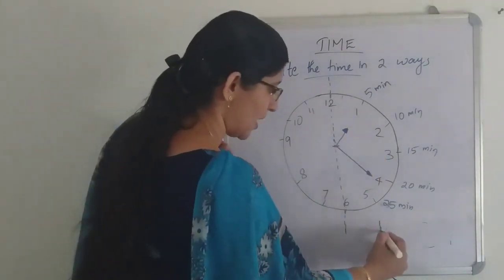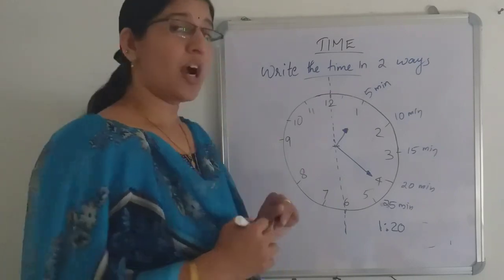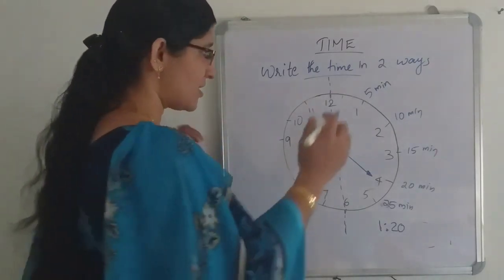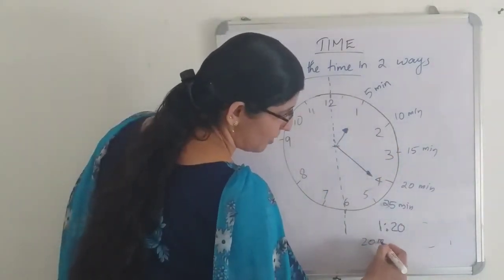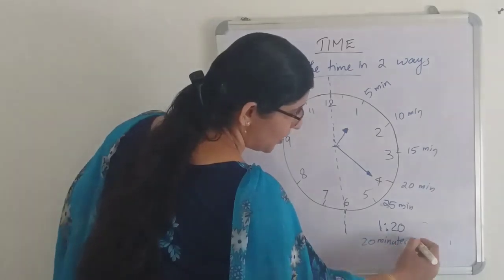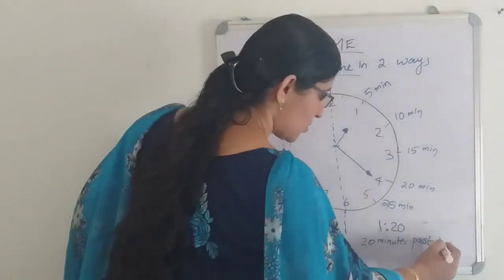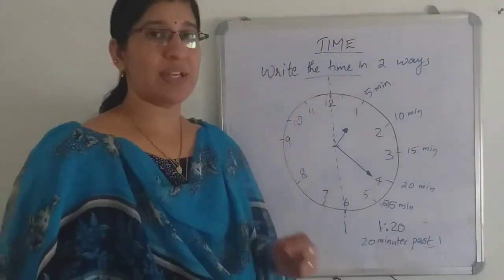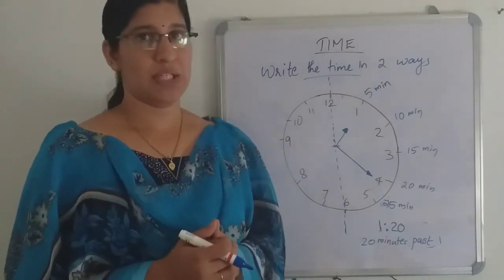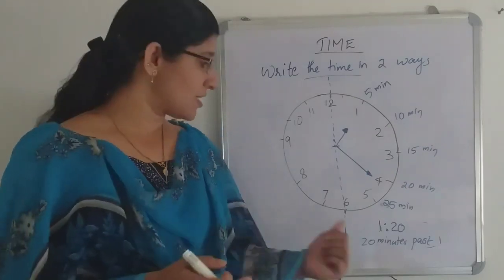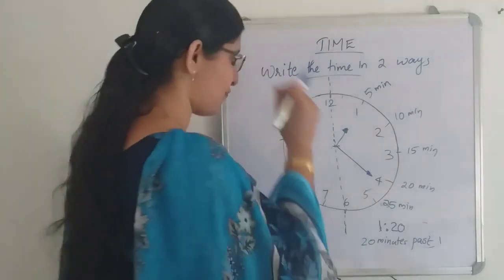The hour hand leads to 1 and the minute hand is at 4, so 4 × 5 = 20. The time is 1:20. It is in the first half, in between 5 and 25, so we write the minute first: '20 minutes past 1.' In Malayalam we say '1 mani 20 minute.'